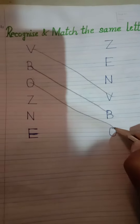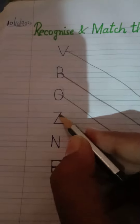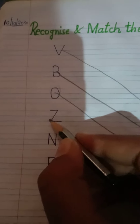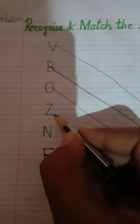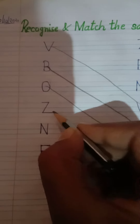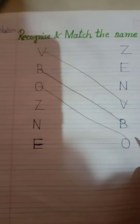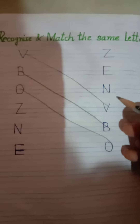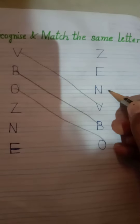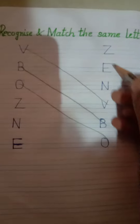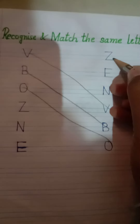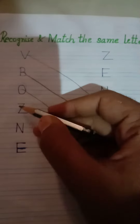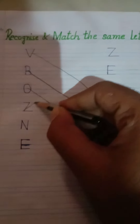One sleeping line, one slanting line, and one more sleeping line — it's a letter Z. Now search, where is the letter Z? Yes, it's a letter Z! So match the Z with Z.